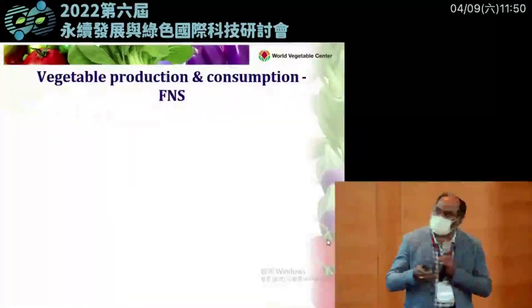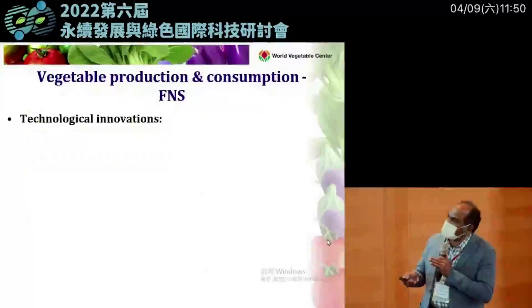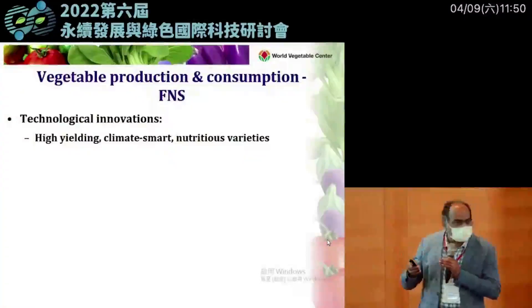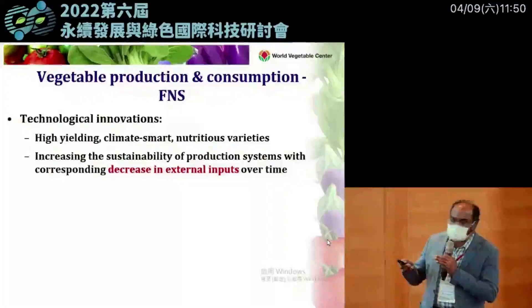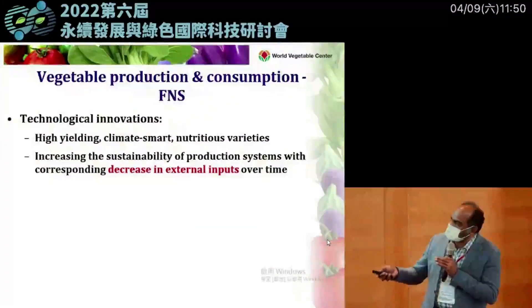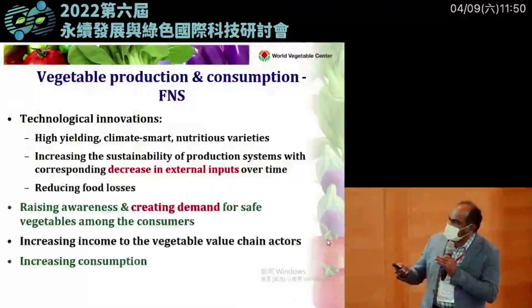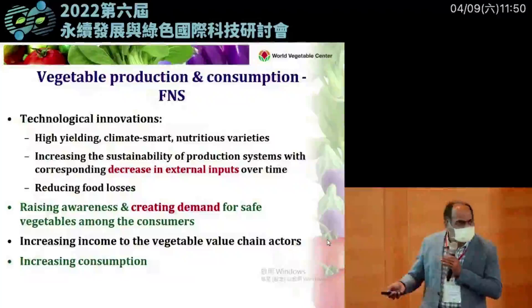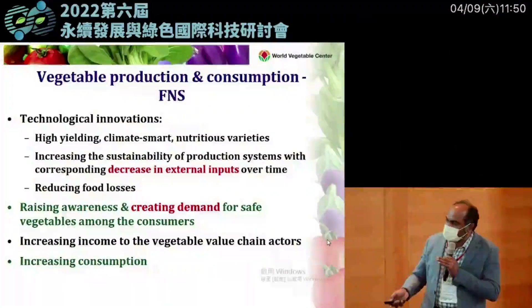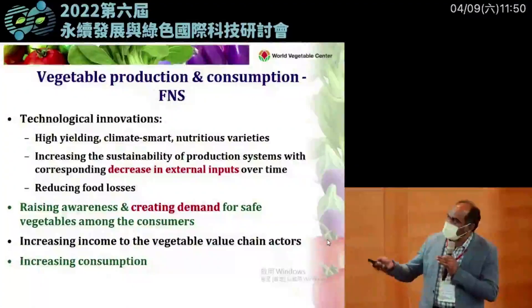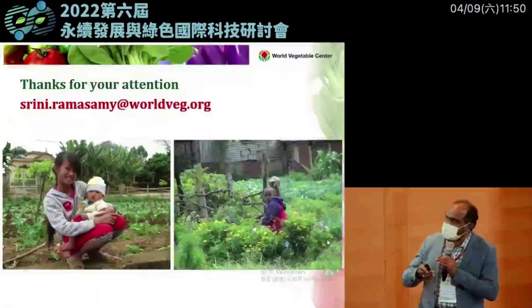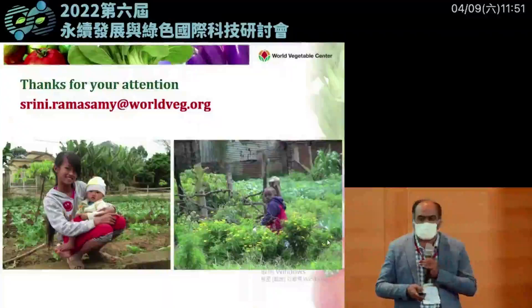Vegetables bring lots of income to producers, marketers, and processors — they are quite important for generating employment. In summary, we work on technological innovations for high-yielding, climate-smart, nutritive varieties; increase sustainability in production systems while decreasing reliance on external inputs; reduce food loss; raise consumer awareness to create demand for safe produce; and increase income for actors along the value chain. This way food and nutritional security is assured. Thank you very much, and I am happy to answer any questions.